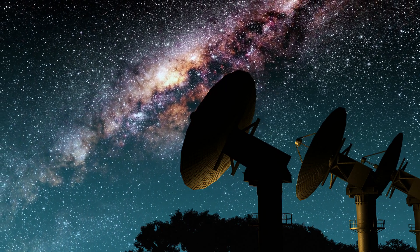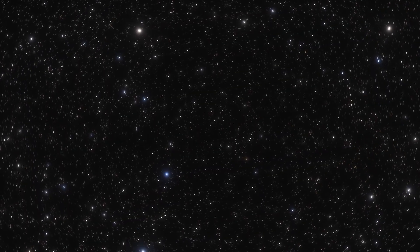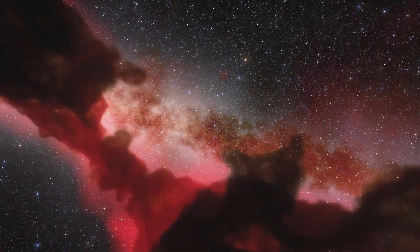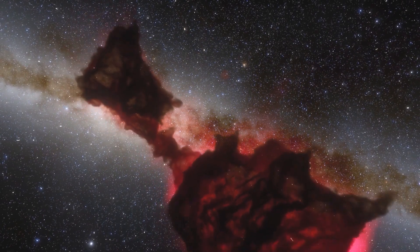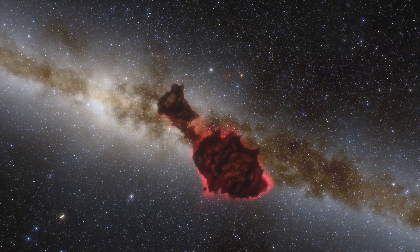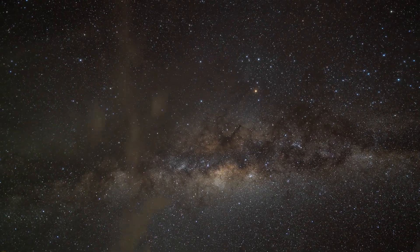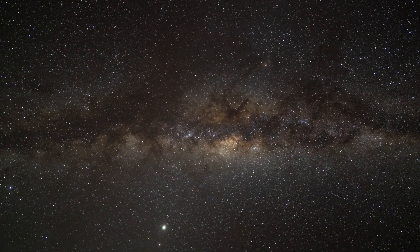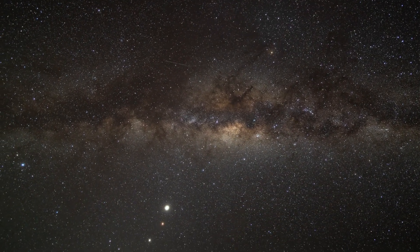But why should the universe be flat? The inflationary theory of the early universe provides a possible answer. According to this theory, in the first fleeting moments after the Big Bang, the universe underwent an incredibly rapid expansion, faster than the speed of light. This expansion stretched out any initial curvature the universe might have had, leading to a cosmos that appears flat across even the largest distances we can observe.